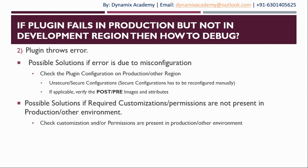Another situation where the plugin might fail with an error is when required customizations or permissions are not present on production or a higher environment other than development. First, make sure all customizations — new fields or required fields — that you are using in your plugin code are present on the production environment. Another common scenario is a permissions error: if permissions are not found, it will throw an insufficient privileges error. From that error message you can determine that certain permissions are missing. The user context in which the plugin is running does not have that specific set of privileges, so you need to ensure the required permissions and customizations are present on the production environment.